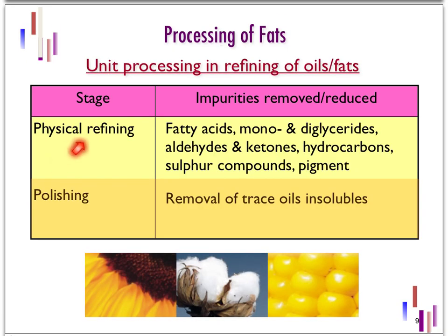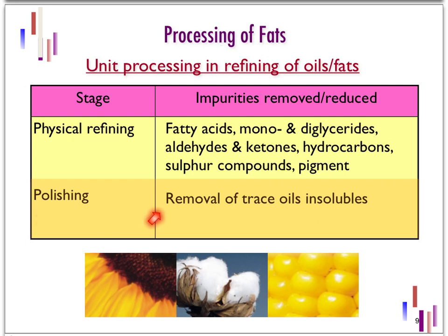In physical refining, the impurities removed during the process include fatty acids, mono- and diglycerides, aldehydes, ketones, hydrocarbons, and so on — essentially the same components removed in chemical refining. Another step typically used in refining is called polishing, the objective of which is to remove as much as possible any trace oil-insoluble material from the oil.